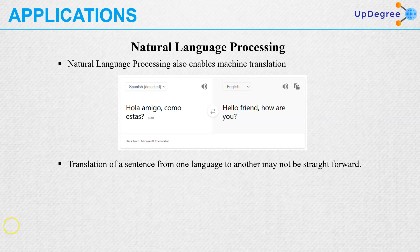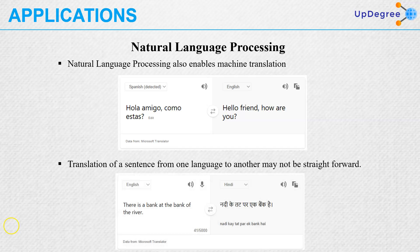Translation from one language to another may not be a straightforward approach. For example: 'There is a bank at the bank of the river.' The first 'bank' actually means a financial institution, but the second 'bank' means the side of the river. The machine learning system has understood the context of the word and translated accordingly into Hindi.